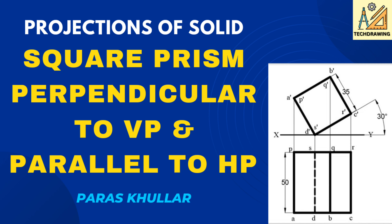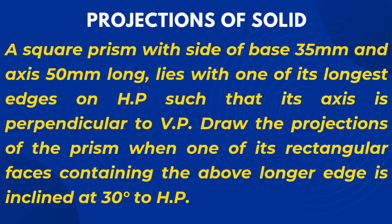Hello students. In this video we will discuss a question of projections of solids when the solid is perpendicular to VP and parallel to HP. A square prism with side of base 35 mm and axis 50 mm long lies with one of its longest edges on HP such that its axis is perpendicular to VP. Draw the projections of the prism when one of its rectangular faces containing the above longer edge is inclined at 30 degrees to HP.